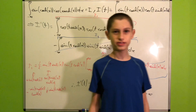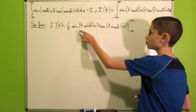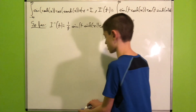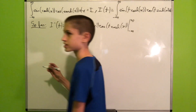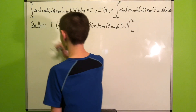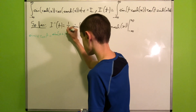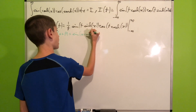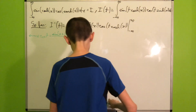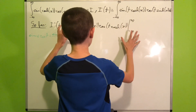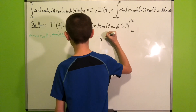Now I'd like to rewrite sine of t·sinh(x) times cosine of t·cosh(x) using a product-to-sum trigonometric identity: sine(α)·cosine(β) = [sine(α+β) + sine(α−β)] / 2. Applying this, we get (1/2t) times [sine of t·(sinh(x) + cosh(x)) + sine of t·(sinh(x) − cosh(x))].